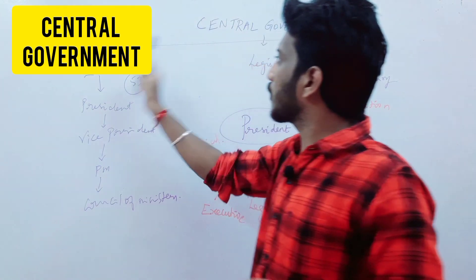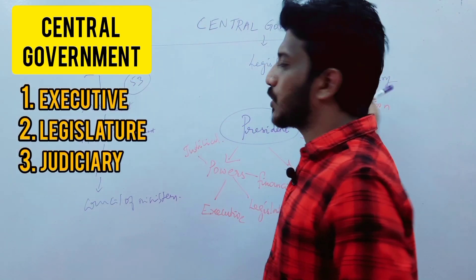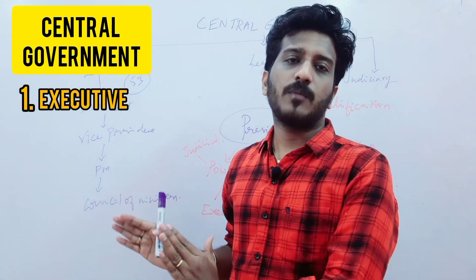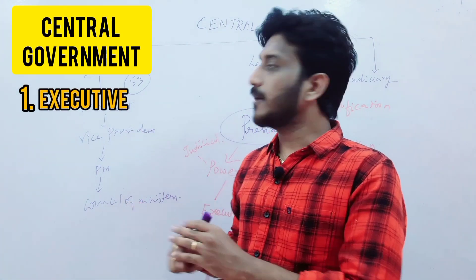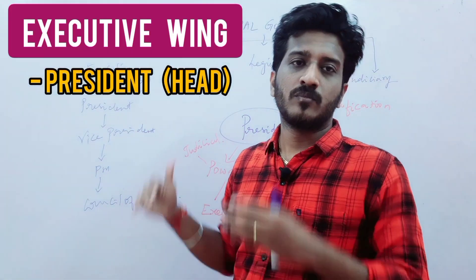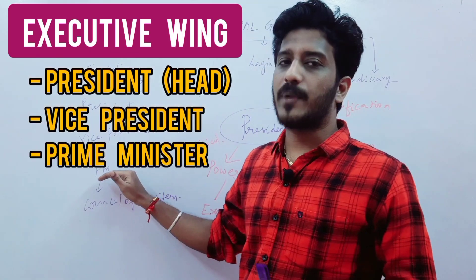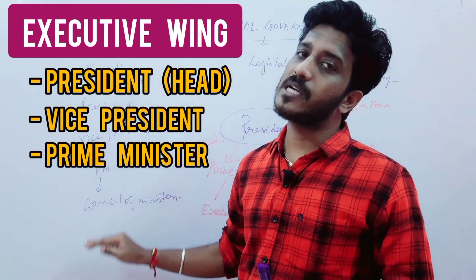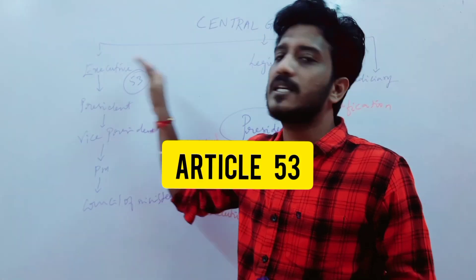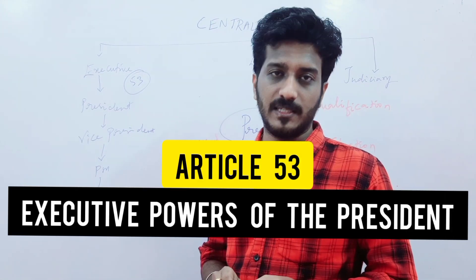The Central Government has three wings: the executive, the legislature, and the judiciary. If we talk about the executive, the first thing to discuss is the executive power of the president. The president is assisted by the vice president, the prime minister, and the council of ministers. Article 53 discusses the executive powers of the president.